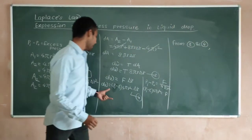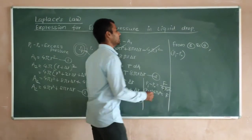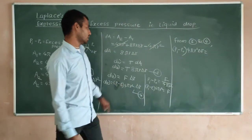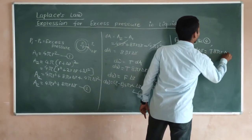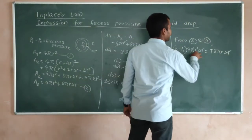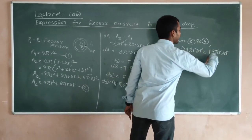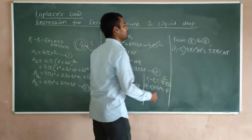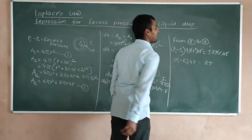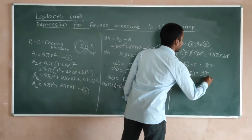We write: (Pi − Po) × 4πr² × δr = T × 8πr × δr. Now δr and δr cancel on both sides, and πr² and πr simplify — the r terms cancel, leaving us with: (Pi − Po) × 4 = T × 8/r. Simplifying gives Pi − Po = 8T / 4r.